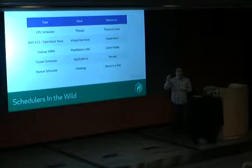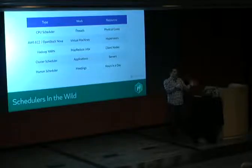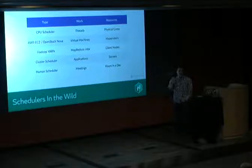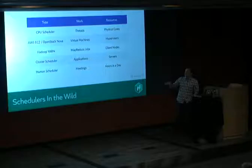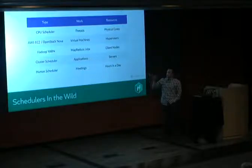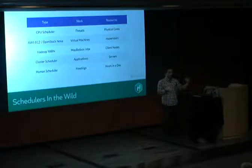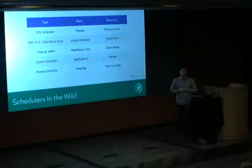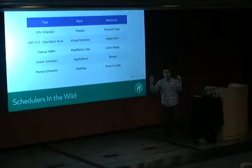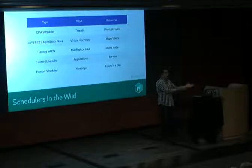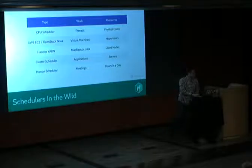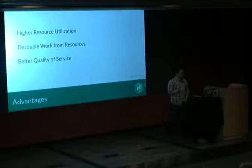There are many kinds of schedulers we interact with daily. EC2 is in fact a virtual machine scheduler — when you request a VM, it finds space and packs it with other customers. There's also Yarn, which schedules MapReduce jobs. Cluster schedulers, which is what Nomad is, have historically been in academia and data science. And there are human schedulers — like an executive assistant mapping meetings onto limited calendar slots.